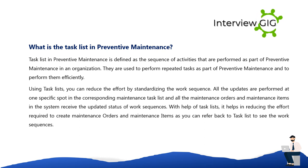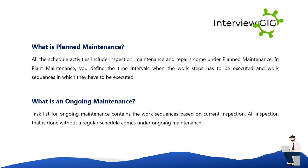Task lists help reduce the effort required to create maintenance orders and maintenance items, as you can refer back to the task list to see the work sequences. What is planned maintenance? All scheduled activities including inspection, maintenance, and repairs come under planned maintenance. In plant maintenance, you define the time intervals and work sequences in which the steps have to be executed. Ongoing maintenance task lists are based on current inspection — all inspections done without a regular schedule come under ongoing maintenance.